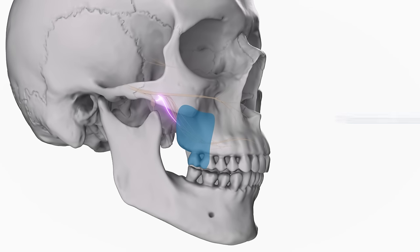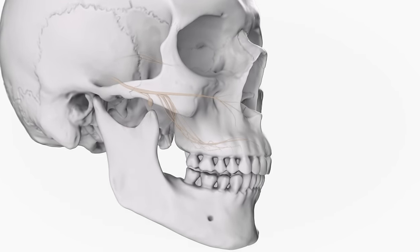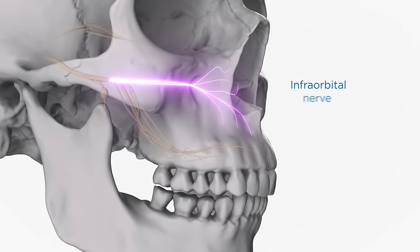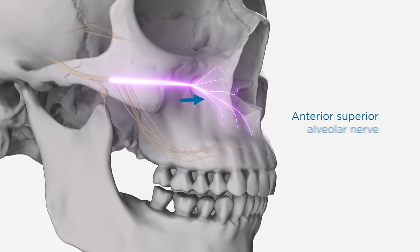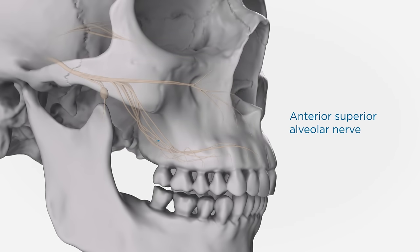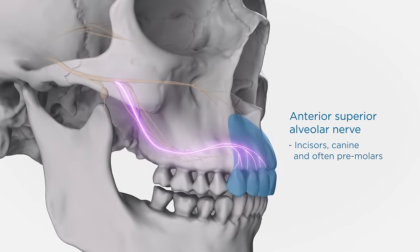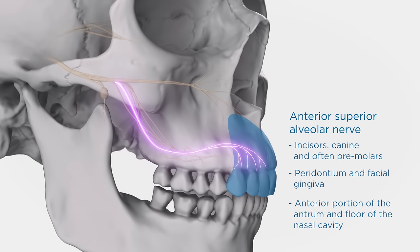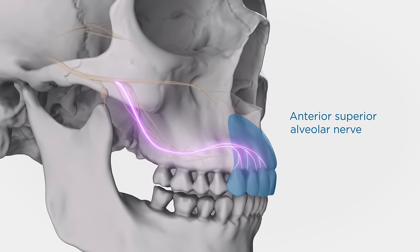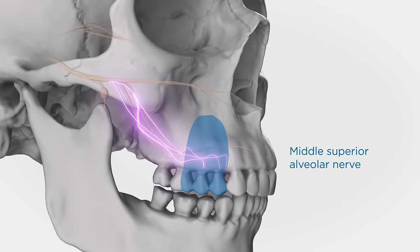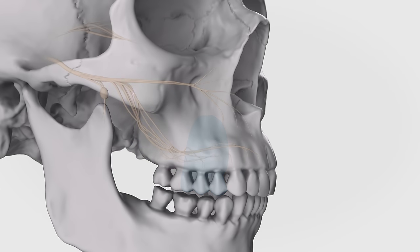The maxillary nerve trunk becomes the infraorbital nerve once it crosses the inferior orbital fissure to travel within the infraorbital groove and canal. During its course, the anterior superior alveolar nerve is given off. After contributing to the superior dental plexus, it provides pulpal innervation to the incisors, canine, and often premolars, the periodontium and facial gingiva, and the anterior portion of the antrum and the floor of the nasal cavity. If present, the middle superior alveolar nerve supplies sensation to the premolar region and the mesial buccal root of the first molar. The infraorbital nerve emerges from the infraorbital foramen to divide into its terminal branches.